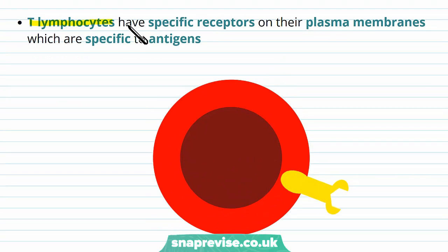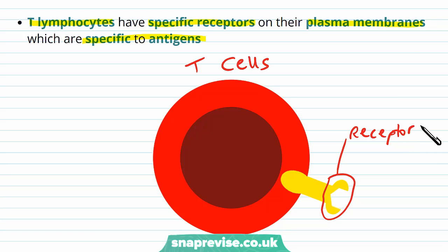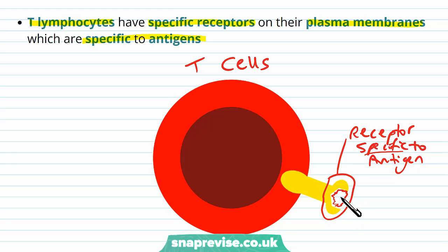The T lymphocytes are similar but have a slightly different function. They have specific receptors in their plasma membranes, and these receptors stay in the membrane — they don't get sent out into the fluids. Again, these are very specific to antigens. The T cells, in a similar way to the B cells, have receptors which are similar to antibodies and are very specific to one unique type of antigen — they will only bind to that particular antigen with the right puzzle piece shape, just like antibodies with B cells, but plasma membrane bound.